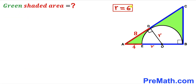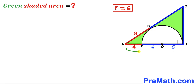So the radius is 6. That means OD = 6, OE = 6, and OB is also a radius equal to 6 units. Therefore the full side AB of triangle ABC is 6 + 6 + 4, which gives us 16 units.